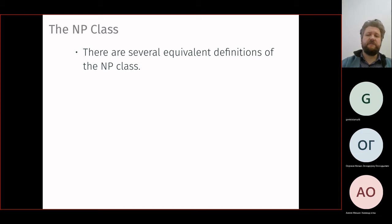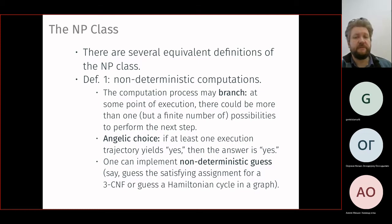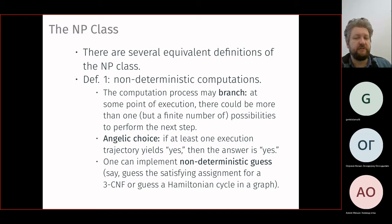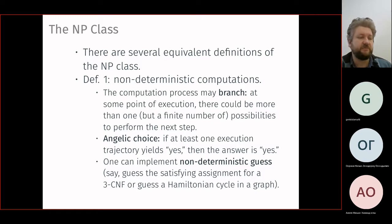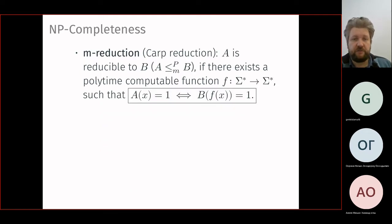The NP class has several equivalent definitions. One uses non-deterministic computations, where at some points execution can non-deterministically branch — there's an angelic choice, so if at least one path yields yes, the answer is yes. This implements non-deterministic guesses. A classic example is finding a Hamiltonian cycle in a graph, or a specific coloring, or a satisfying assignment for a boolean formula like 3-CNF — a non-deterministic machine can just guess the correct answer.